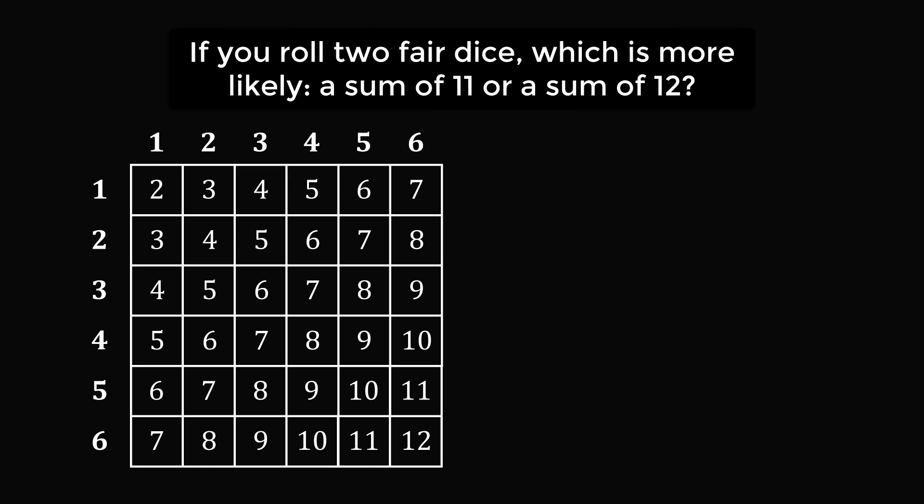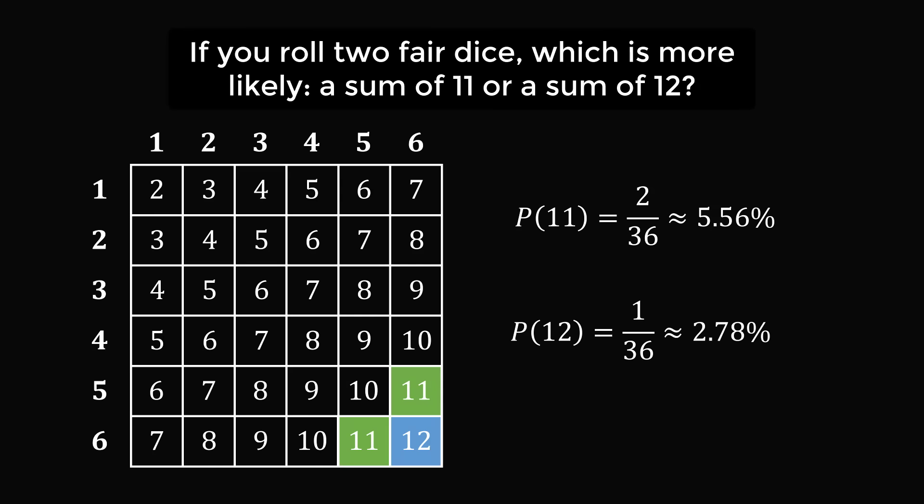Now, how many ways can we get a sum of 11? One way is we can have 6 plus 5, and the other way will be 5 plus 6. The probability of getting a sum of 11 will be 2 divided by 36, which is approximately equal to 5.56%. Now, looking at a sum of 12, there's only one way, which is 6 plus 6. So, the probability of getting a sum of 12 is equal to 1 over 36, which is approximately equal to 2.78%.